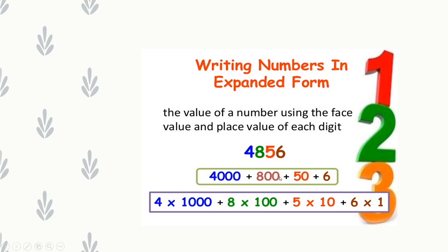How to write a given number in expanded form. To write numbers in expanded form, we write the value of each digit using its face value and place value. Here we are given the example 4856.